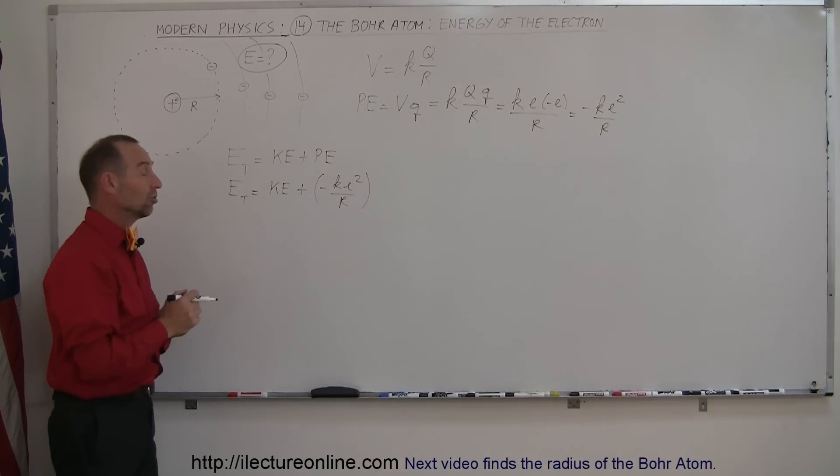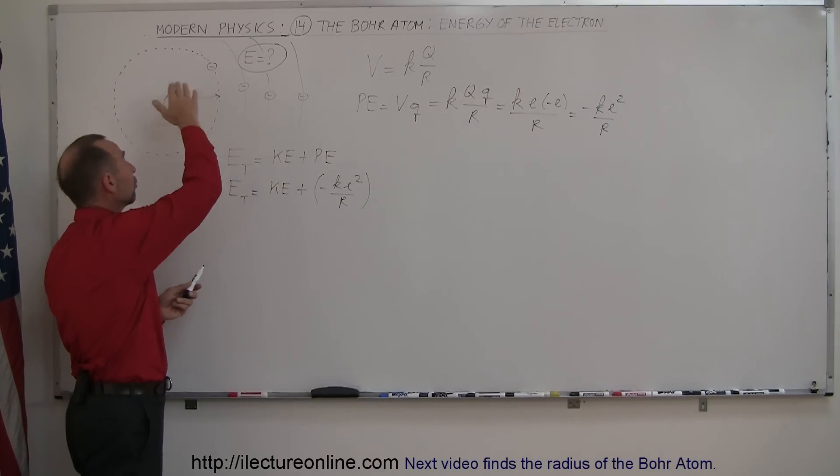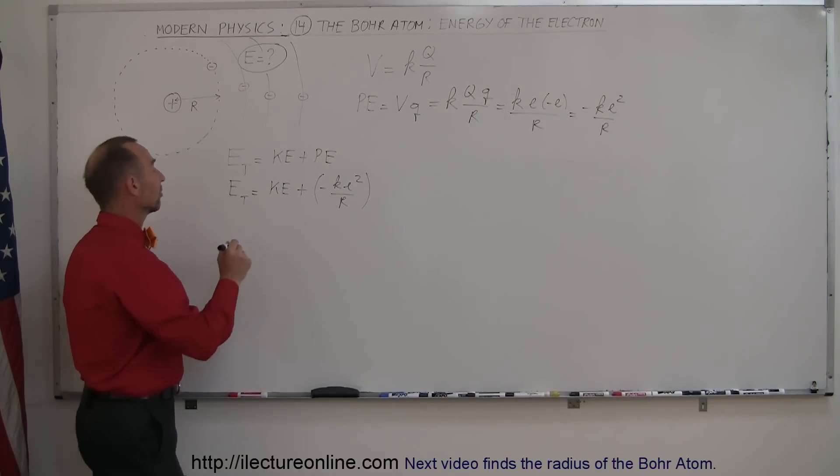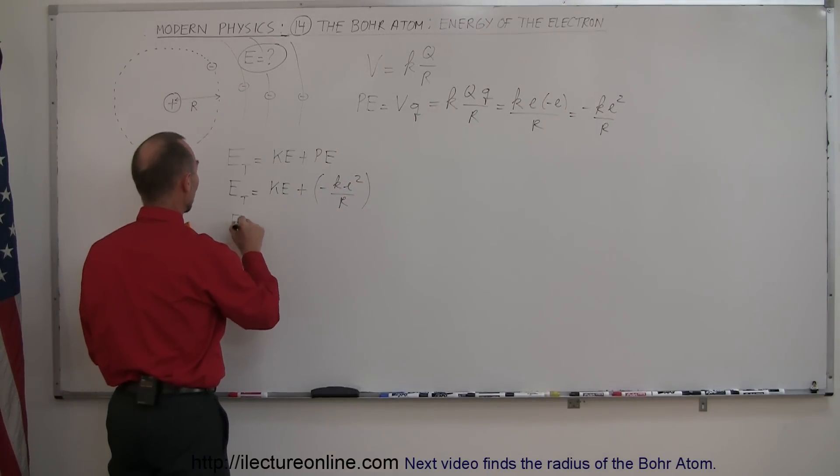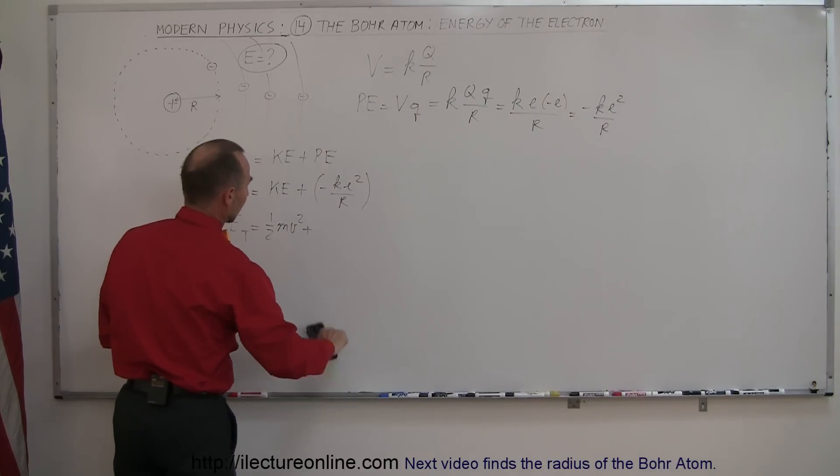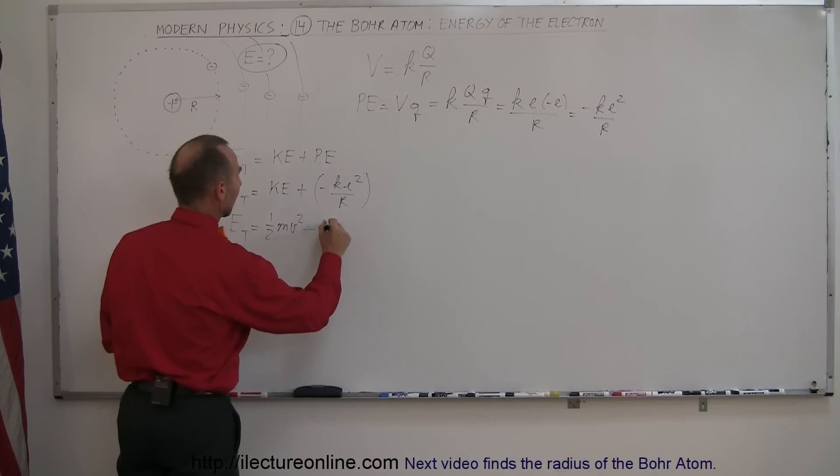What about the kinetic energy? For a small particle not moving at relativistic speeds, and it turns out that an electron in orbit around the nucleus of a hydrogen atom does not travel at relativistic speed, we can say that the kinetic energy is equal to ½Mv² minus Ke² over R.